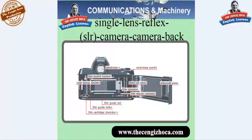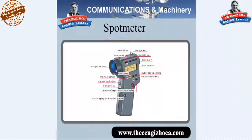Single lens reflex SLR camera back: viewfinder, film rewind system, focal plane shutter, film guide rail, film guide roller, film cartridge chamber, film sprocket, film leader indicator, take-up spool, neck strap eyelet, pressure plate, spot meter, shadow key, lock switch, average key, highlight key, eyepiece, data display, shutter speed setting, memory recall key, film speed, objective lens, memory cancel, measuring button, memory key, aperture, exposure value display, display data, display illumination button.